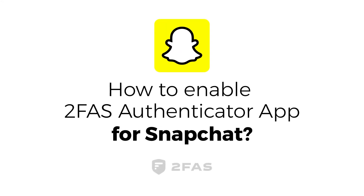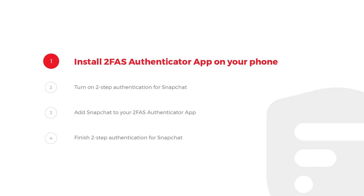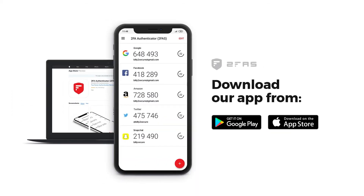How to Enable 2FAS Authenticator App for Snapchat? Step 1: Install 2FAS Authenticator app on your phone. Download our app.